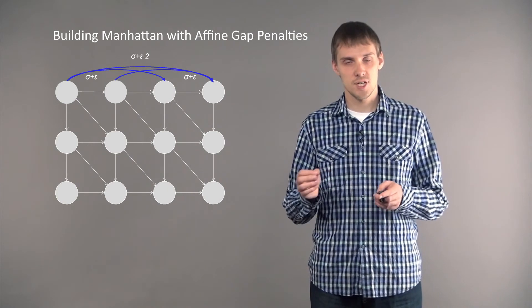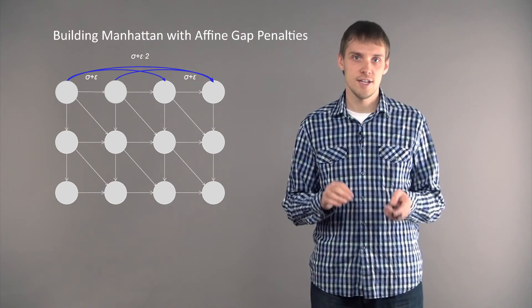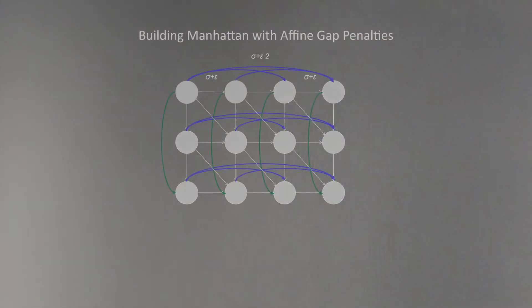For our Manhattan grid, we actually need to add a lot of these edges. We need to add separate edges for all gaps of length 2, edges for all gaps of length 3, and more and more. We will need to add it vertically and horizontally.